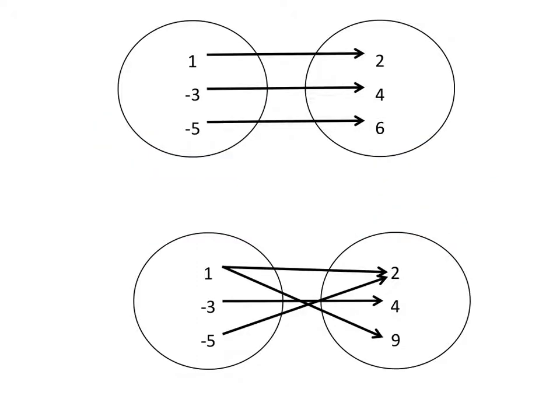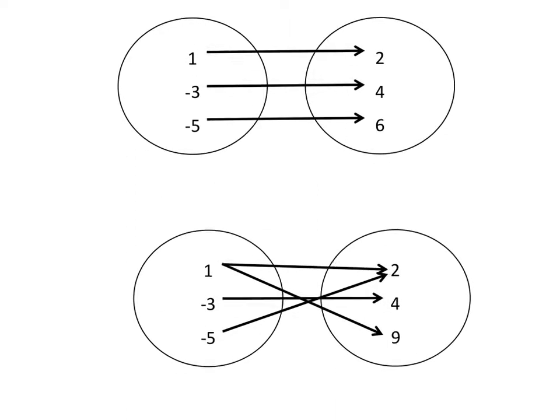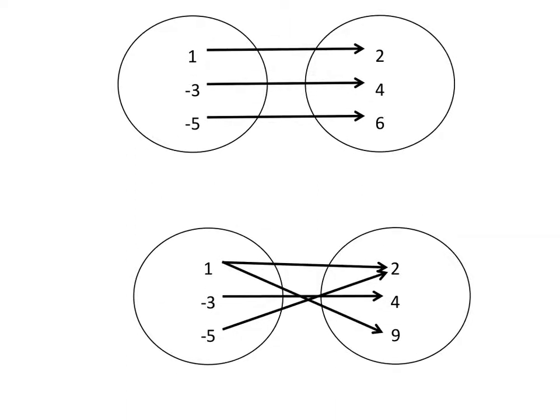Now let's look at circle maps. Notice that all three of these values are mapped to just one y value. That means none of the x's are being used twice, and this one's a function.